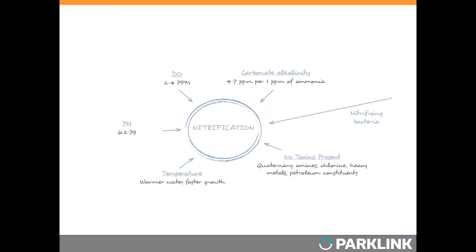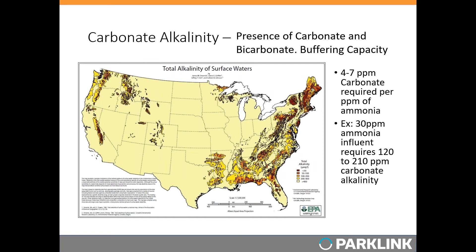Another important factor is carbonate alkalinity. In contrast to heterotrophic floc formers, autotrophic nitrifiers use inorganic carbon as their carbon substrate — for cellular components and to make their own organic carbon for energy. Carbonate alkalinity is not the same as hardness — hardness refers to divalent cations like magnesium, calcium, iron, or manganese. Both are reported in terms of parts per million of calcium carbonate, which causes confusion. Alkalinity measures the buffering capacity of water — the amount of hydroxides and carbonates that can neutralize acids — and this is not the same as pH.